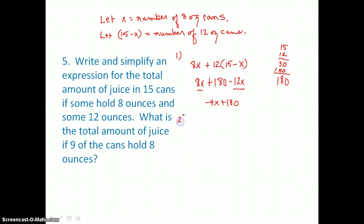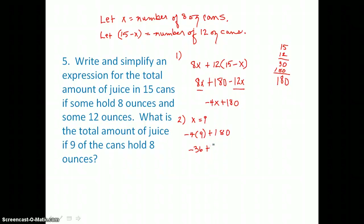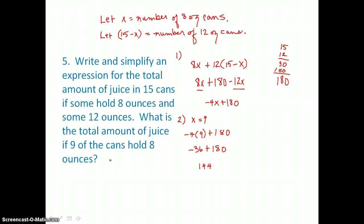The second part asked: what is the total juice if 9 of the cans hold 8 ounces? Since x represents the number of 8-ounce cans, we let x equal 9 and evaluate: negative 4 times 9 plus 180. We multiply to get negative 36, then add negative 36 to 180. More positives than negatives, so we get 144. The total amount of juice in all 15 cans is 144 ounces.